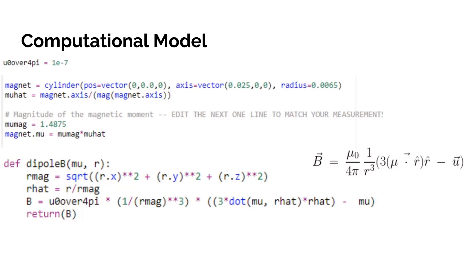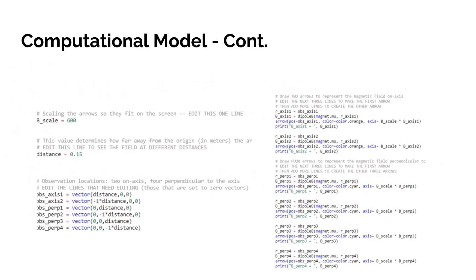Here is our computational model. In this section we're creating our constants and inputting our magnetic field equation of a bar magnet into code. In this next section we are scaling and positioning the arrows representing the magnetic field of the bar magnet to get it visually ready.